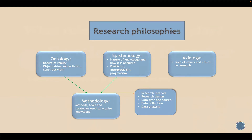Before I go deeper into the sections of chapter three, I wanted to briefly touch on the research philosophies. As a PhD student you are expected to know and understand the four broad branches of research philosophies. The first one is ontology, which refers to the nature of reality — is your reality externally influenced or does it emerge from within? Under ontology there are three different branches: objectivism, subjectivism, and constructivism.